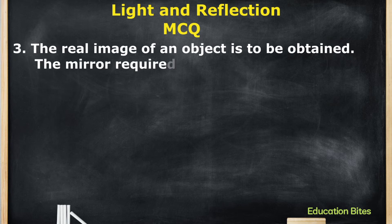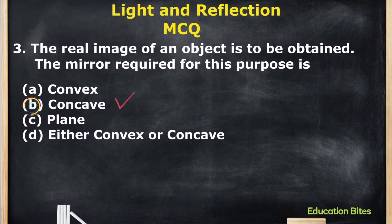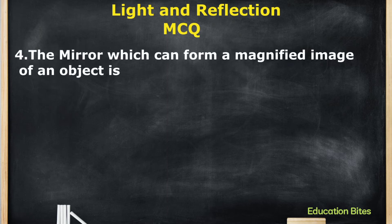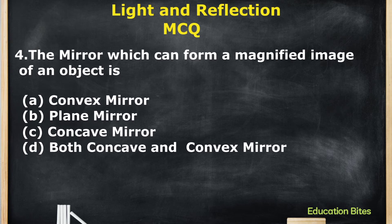The next question: The real image of an object is to be obtained. The mirror required for this purpose is — A. Concave mirror, B. Plane mirror, C. Concave mirror, or D. Both concave and convex mirror. The correct option is C: Concave mirror.